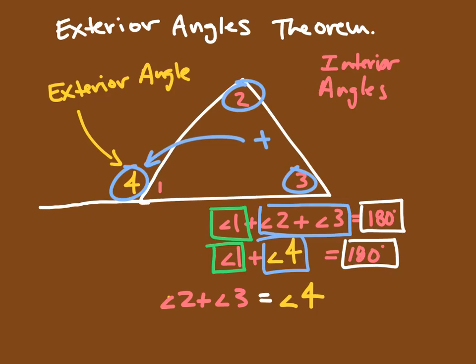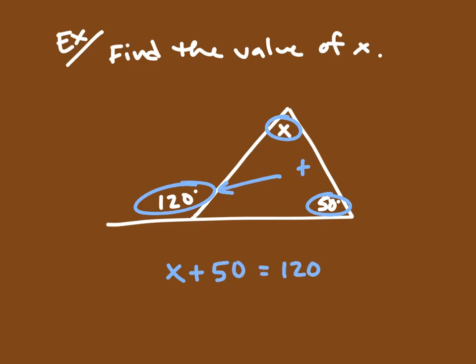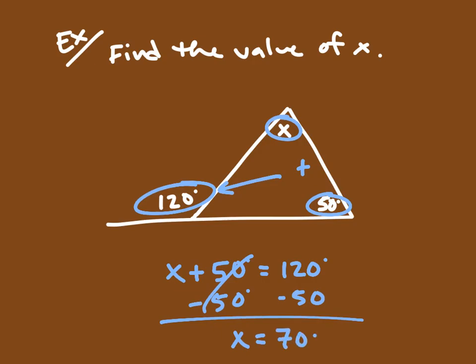Let's look at a quick practice problem. Given a picture with an exterior angle and two remote interior angles, we can apply the exterior angles theorem. If x and 50 degrees are the remote interior angles and 120 degrees is the exterior angle, we set up: x plus 50 equals 120. Subtracting 50 from both sides gives x equals 70 degrees. That's all for this video — hopefully you enjoyed it and we'll talk soon!